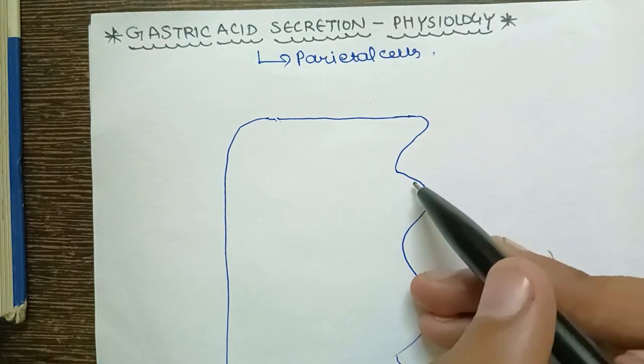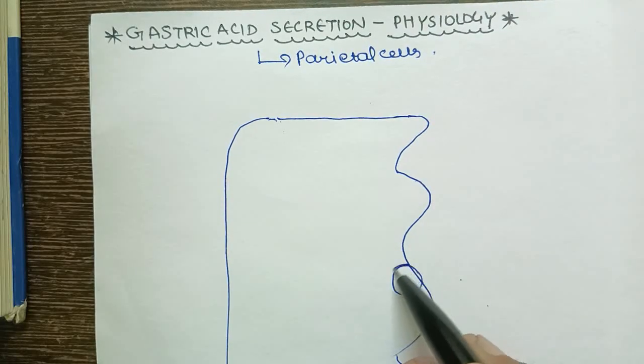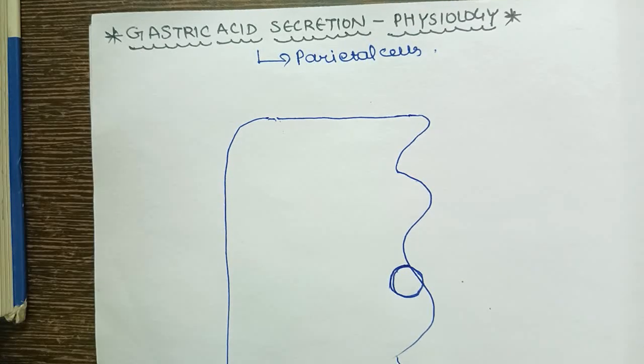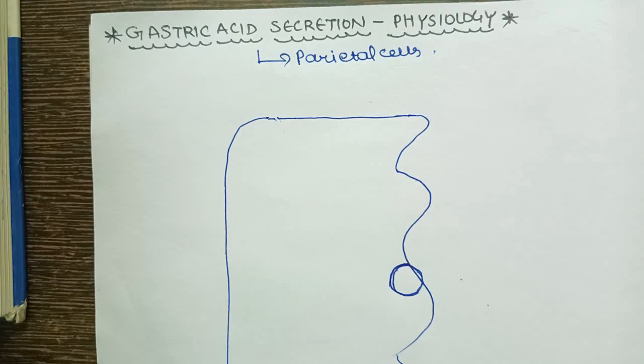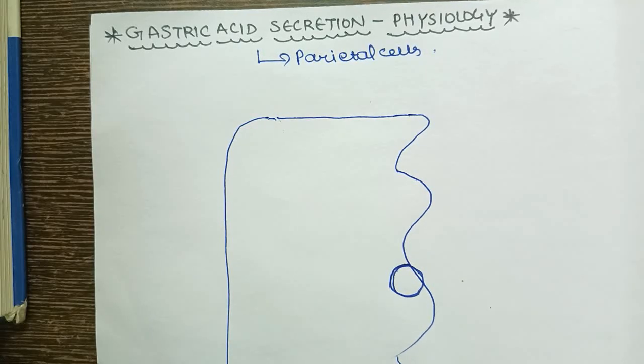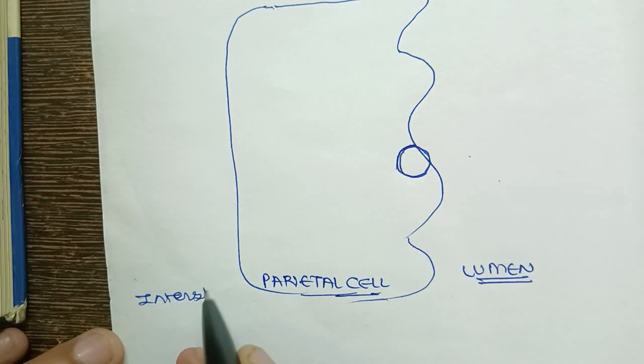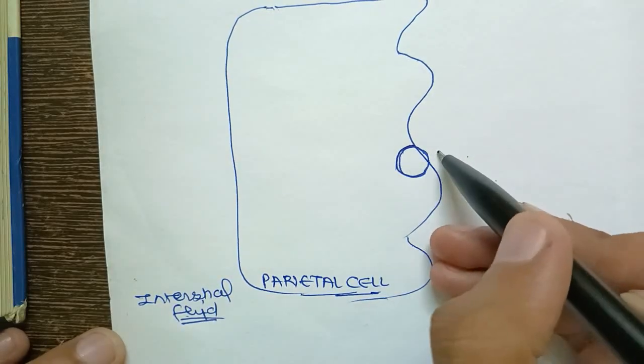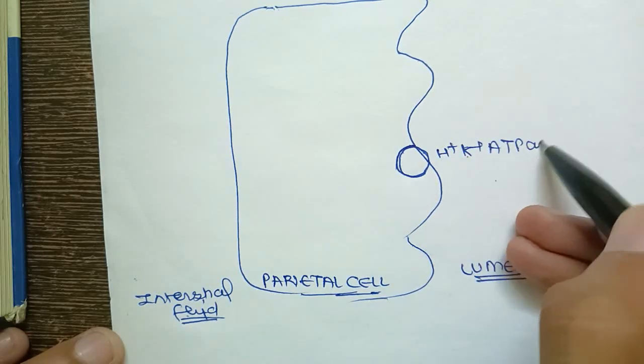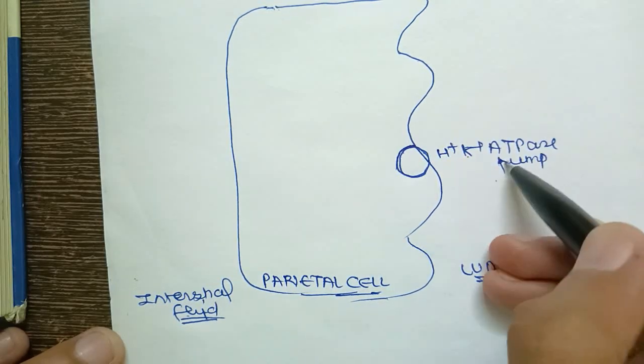The most important driving force for acid secretion - this is a parietal cell. This is the lumen and this is the interstitial fluid. The parietal cell's most important pump is the H+, K+, ATPase pump. This is the most important driving force.